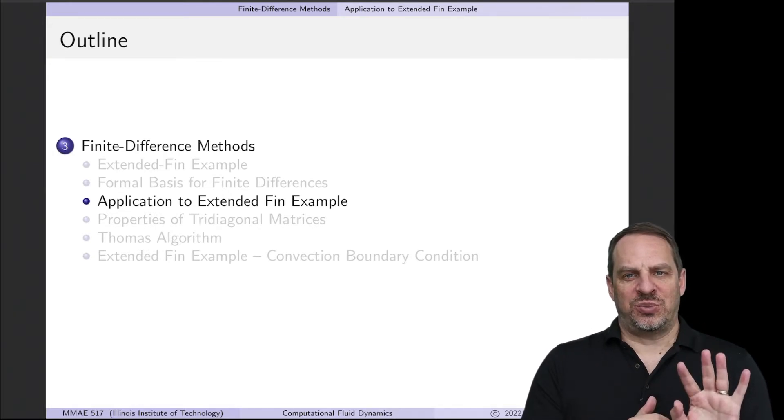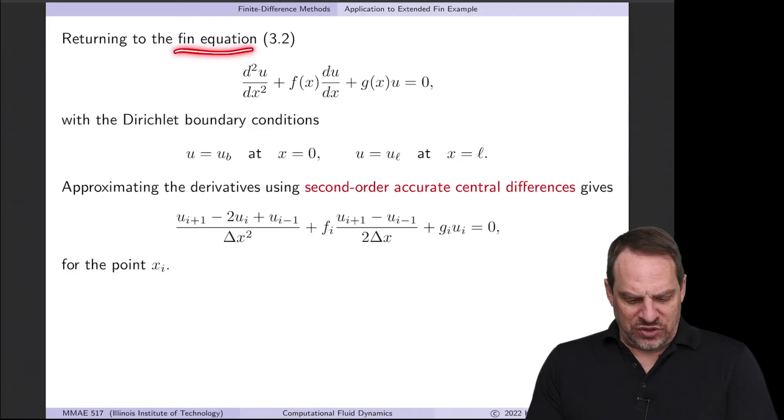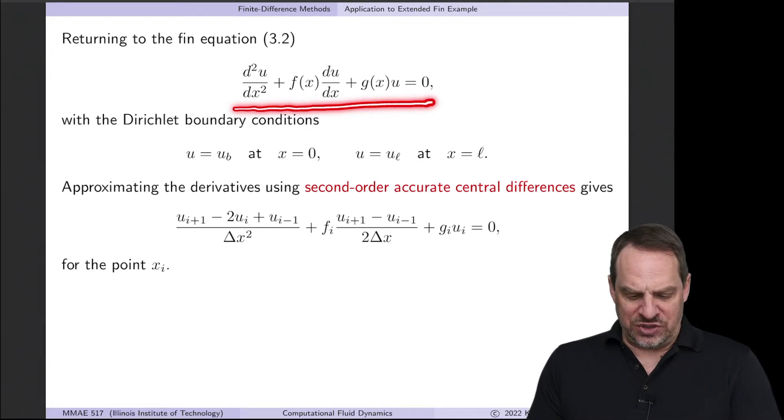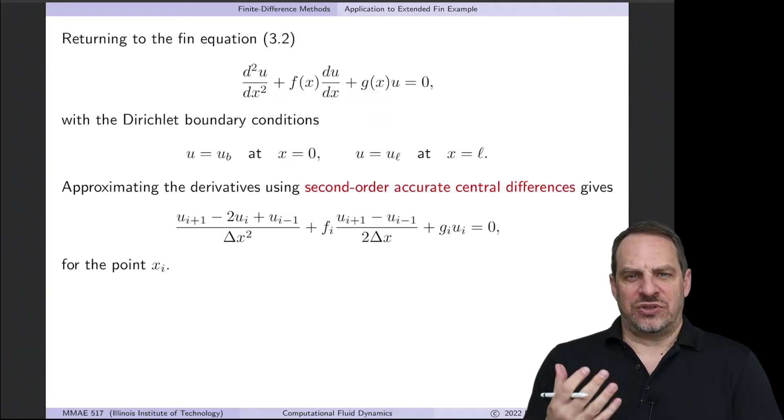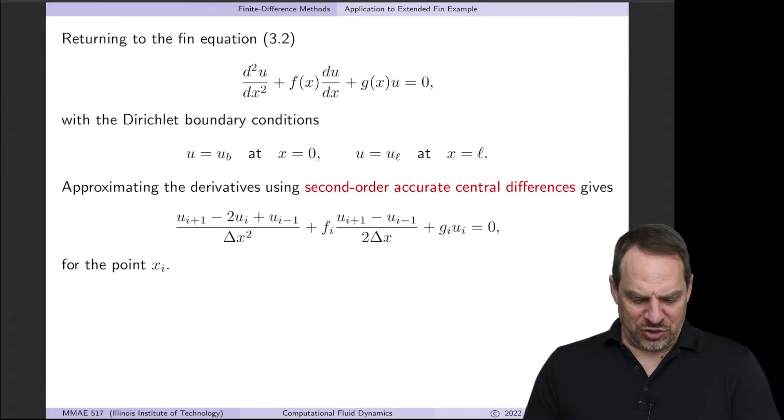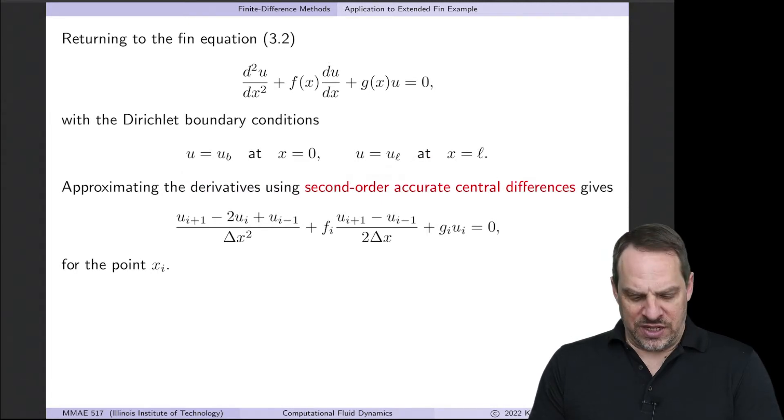I want to take those finite difference approximations and apply them to extended fin examples. So remember the fin equation looks like this: d squared u dx squared plus f of x times du dx plus g of x times u is equal to zero. These f of x and g of x coefficients are known and depend on the cross-sectional shape, surface area, and heat transfer properties in this particular problem. Then we have the boundary conditions. At the base, the temperature is u sub b, and at the tip, the temperature is u sub l.